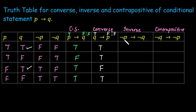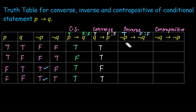For the inverse, negation P implies negation Q: this is again a conditional statement, false only when negation P is true and negation Q is false. Not P is true in the third and fourth cases. Among those, negation Q is false only in the third case. So only in the third case is the inverse false; the rest are true.